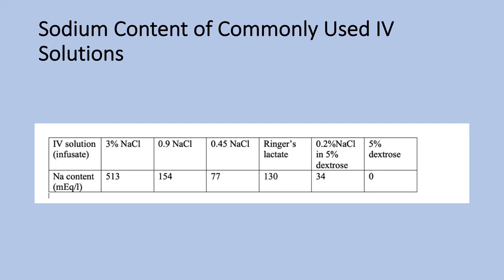This useful table shows sodium content in commonly given solutions. Memorize: 3% saline = 513 mEq/L; 0.9% saline = 154 mEq/L; half normal saline = 77 mEq/L. Lactated Ringer's has 130 mEq of sodium per liter — slightly hypotonic — so it's not the best solution for hyponatremia; 0.9% saline would be better. Solutions like 0.2% saline in 5% dextrose have only 34 mEq/L and are truly hypotonic. D5W has zero sodium.